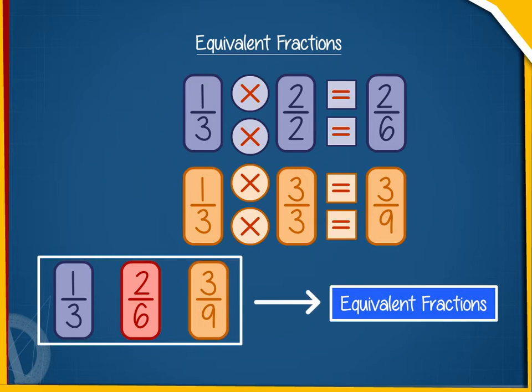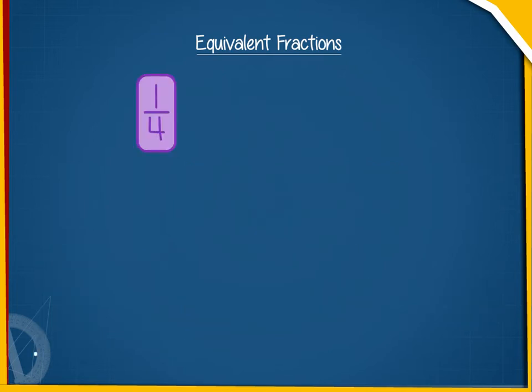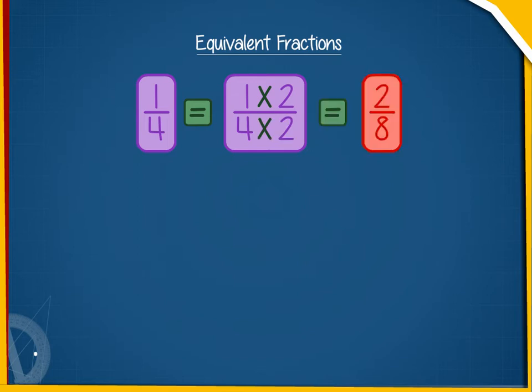Equivalent fractions of a fraction can be obtained by multiplying or dividing its numerator and denominator by the same non-zero number. 1 by 4 is equal to 1 into 2 by 4 into 2, equal to 2 by 8.